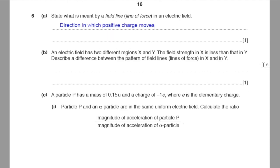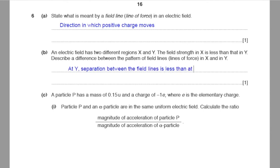Part B. An electric field has two regions X and Y, where the field strength in X is less than in Y. Describe the difference in field line patterns. In regions of stronger field, field lines are closer together, so the separation between field lines at Y is less than at X.